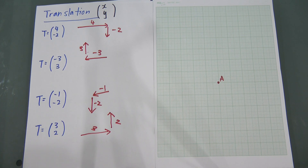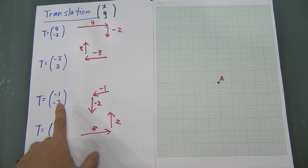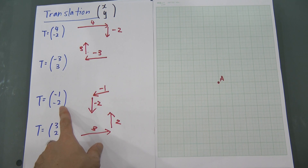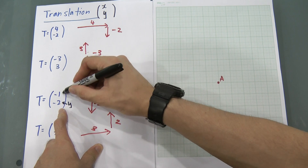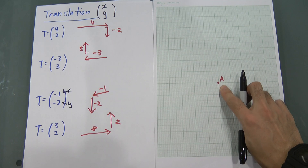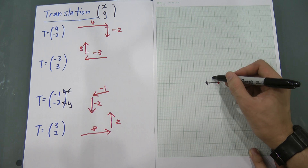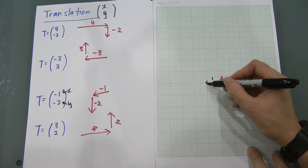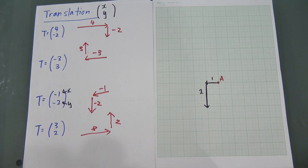I think translation is the easiest one in the exam. Here I put some coordinates to help you better understand. I choose the translation (-1, -2). Negative one is for x, negative two is for y. If point A is here, negative one means you are moving left for one unit, and then negative two means you are moving down two units. Therefore, the new coordinate A will be at the new position.